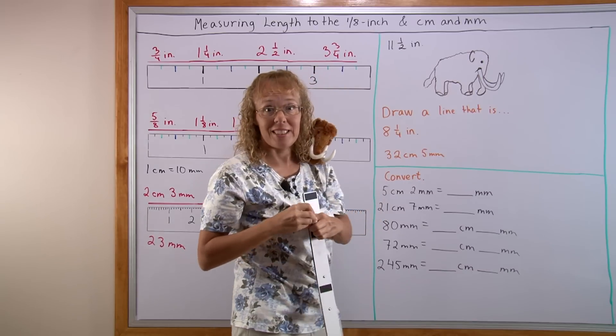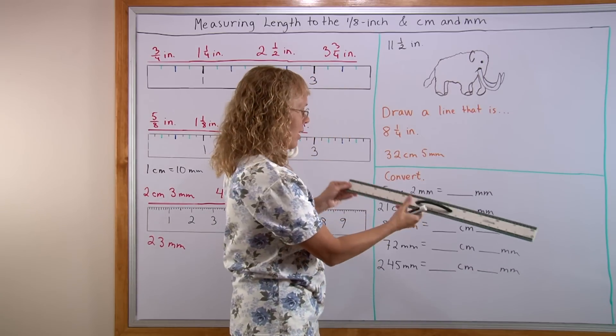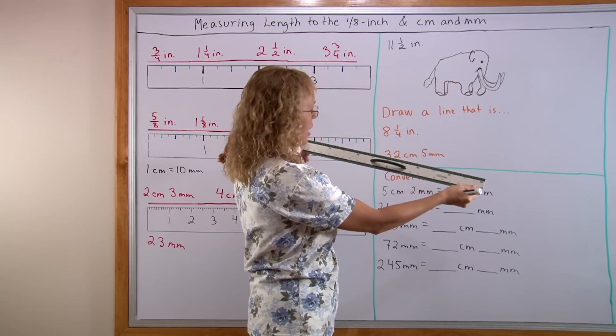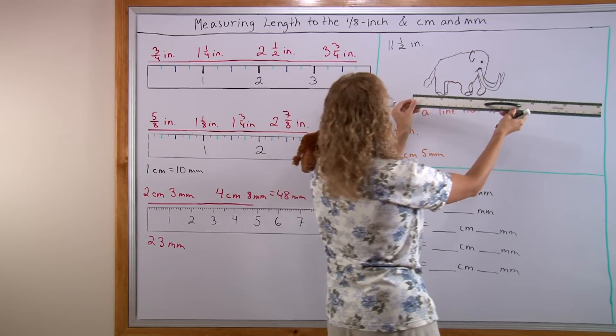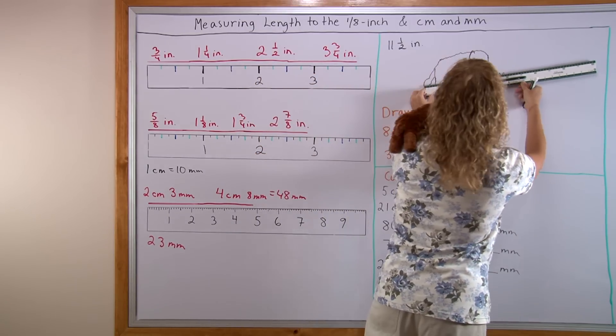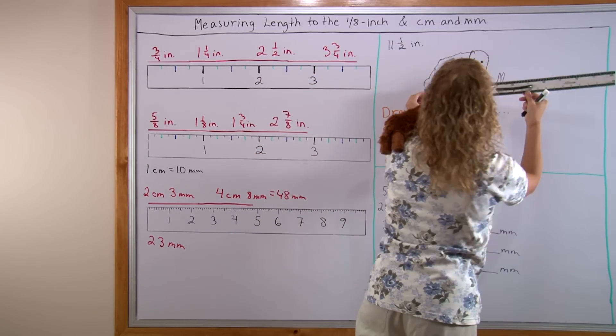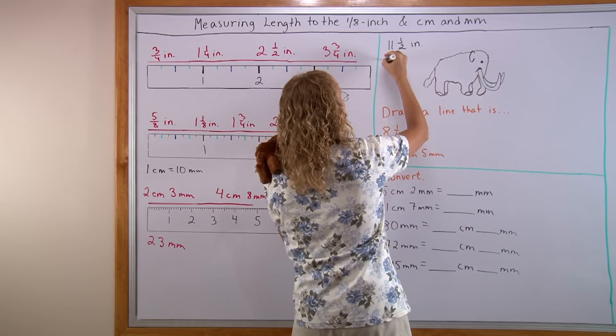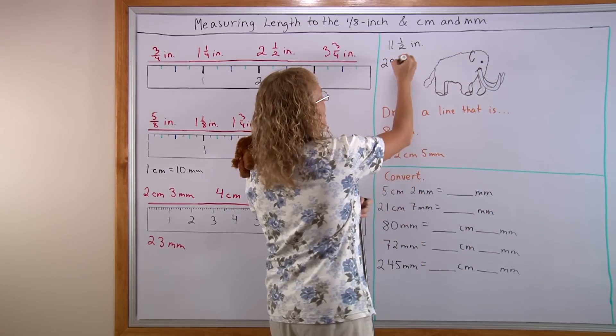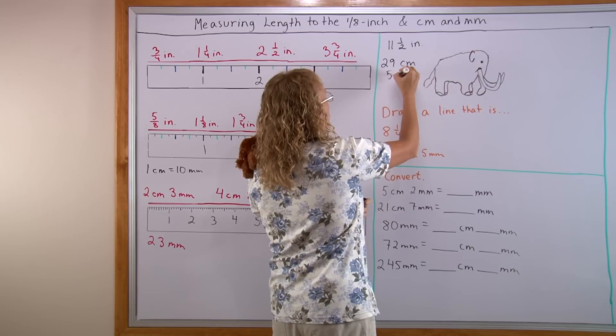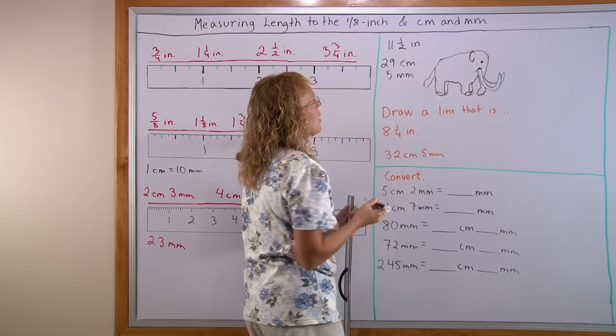Let's measure Matthew also in centimeters and millimeters. My ruler here actually doesn't mark the millimeters. It just marks centimeters and half centimeters. But let's try. Let's say 29 and a half. Or it would be 29 centimeters, 5 millimeters. About.